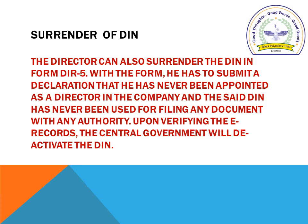Regarding surrender of DIN — a person who has not used the number may file an application in Form DIR-5 to the central government for surrender of his DIN. He has to submit a declaration that he has never been appointed as a director in any company and that the said DIN has never been used for filing any document with any authority. Upon verifying the records, the central government will deactivate the DIN.